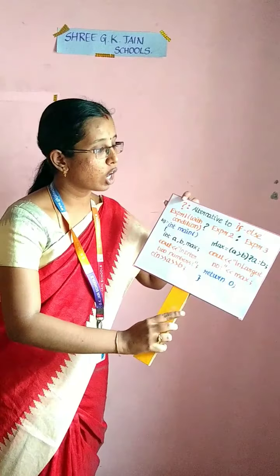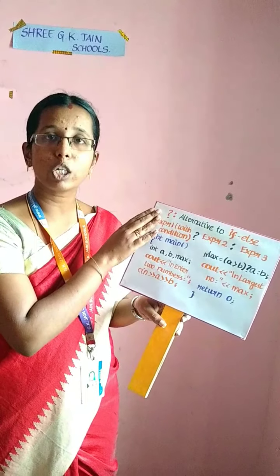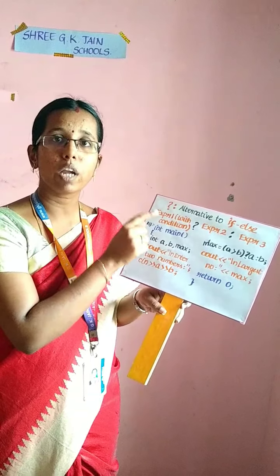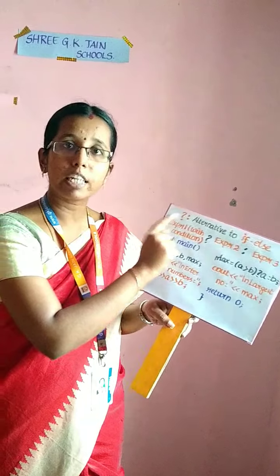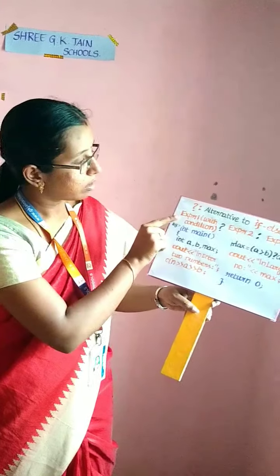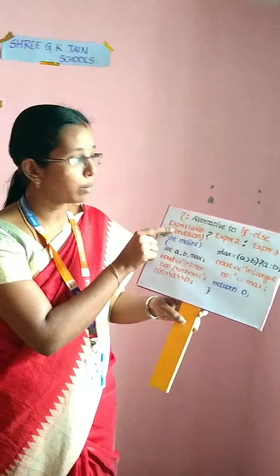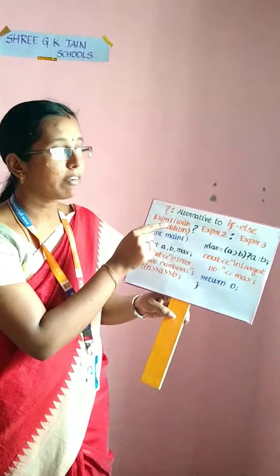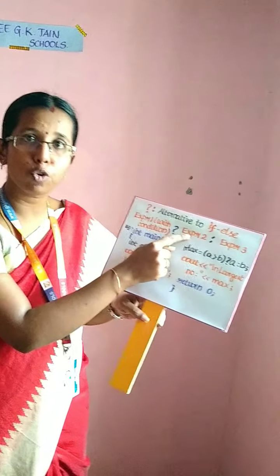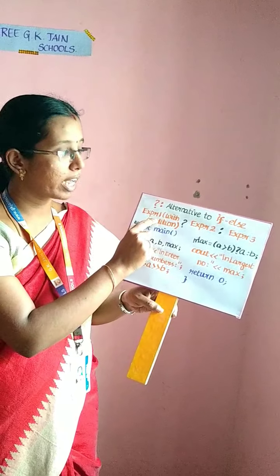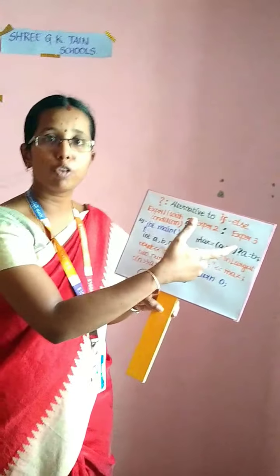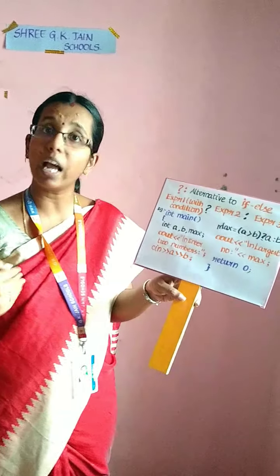The next is your conditional statement, which is a ternary operator. Ternary operator means you can use three operands. It is an alternative to your if-else statement. The expression has a condition that is checked; if that condition is true, then it executes expression 2. If it is false, then the control jumps to expression 3. So it is an alternative for your if-condition with the else statement.